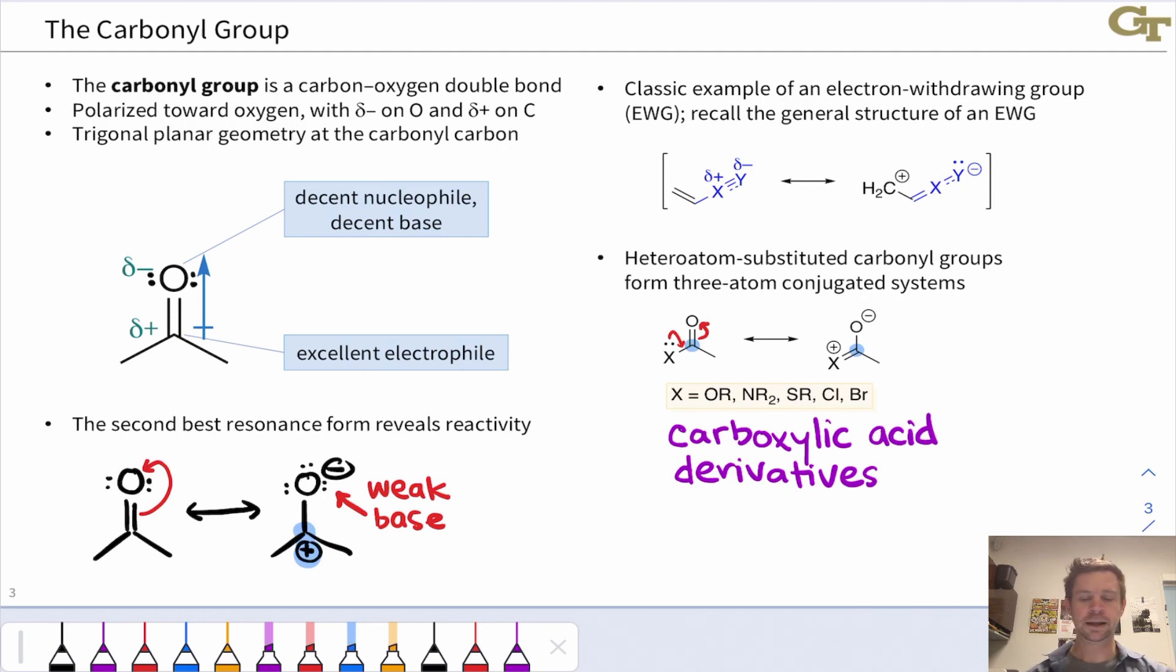The carbonyl group is a classic example of an electron withdrawing group. And just to briefly note this, recall that an electron withdrawing group is an X, Y double or triple bond, where Y is more electronegative than X, so that the bond is polarized toward Y. And the carbonyl group fits this description exactly. Y is the carbonyl oxygen, X the carbonyl carbon, and this alternative resonance form when that carbonyl is in conjugation, for example, with a CC double bond, is going to put positive charge at not the carbonyl carbon, but a carbon two carbons away, one that we'll refer to as the beta carbon in the future.